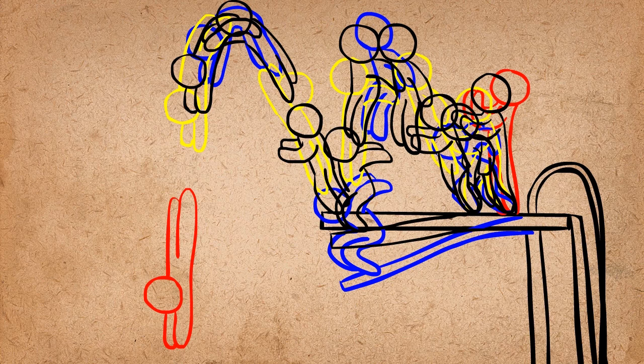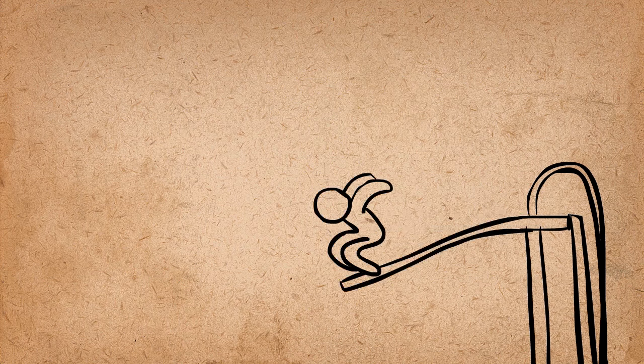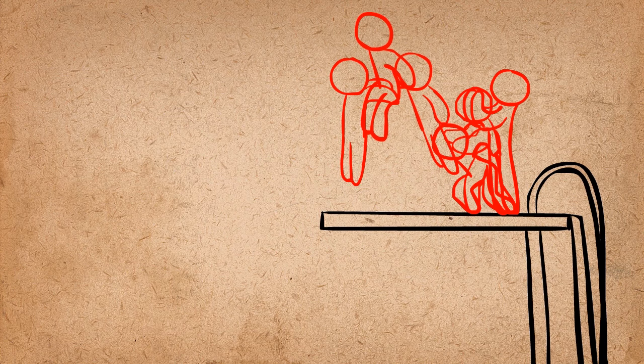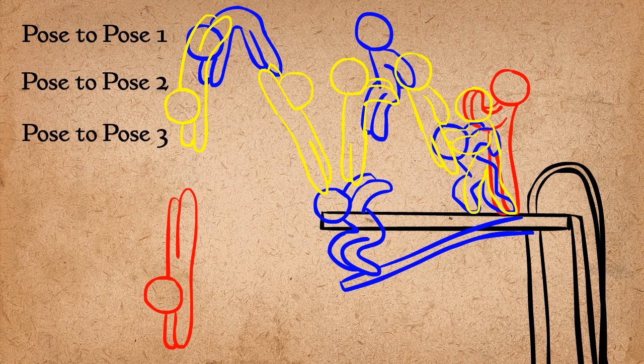At this point, you can start in-betweening. Working with this sort of hierarchy will give you the most control, as opposed to doing your pose to pose straight ahead, so to speak. This is like pose to pose within pose to pose, because you are perfecting the poses at each level before moving down to the next level.